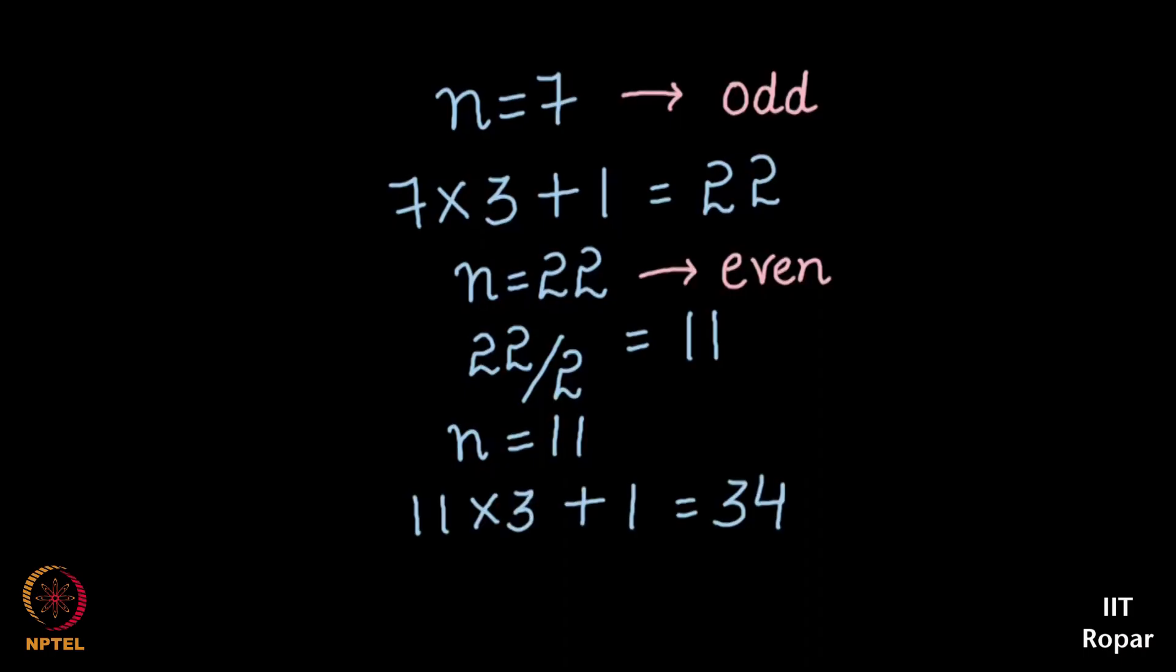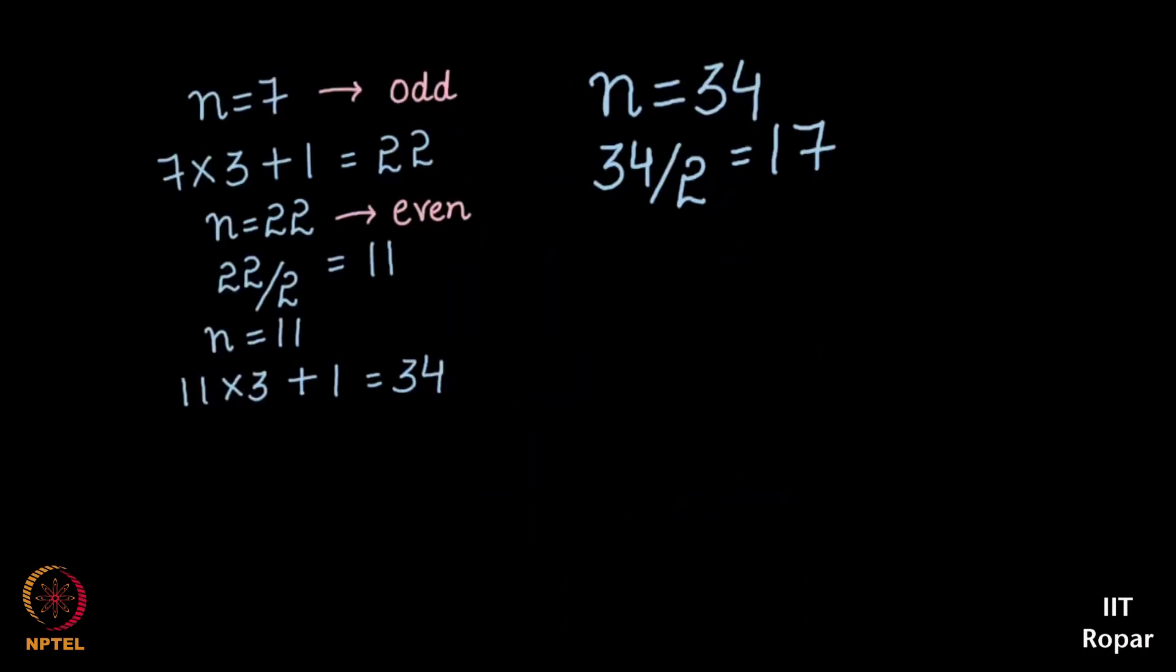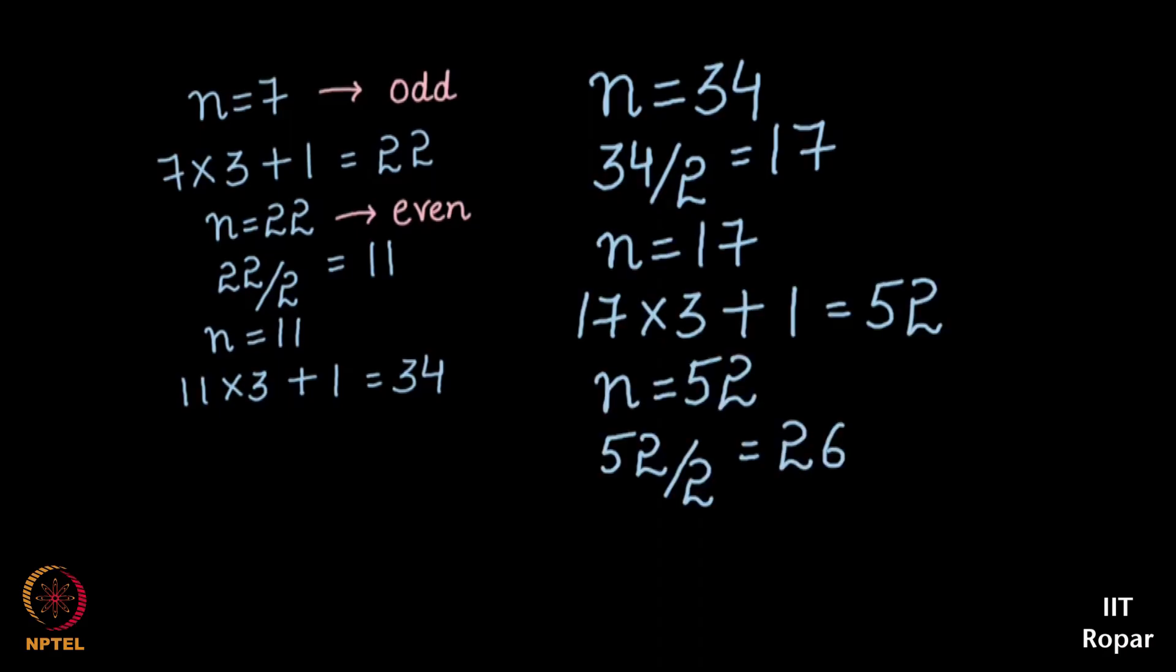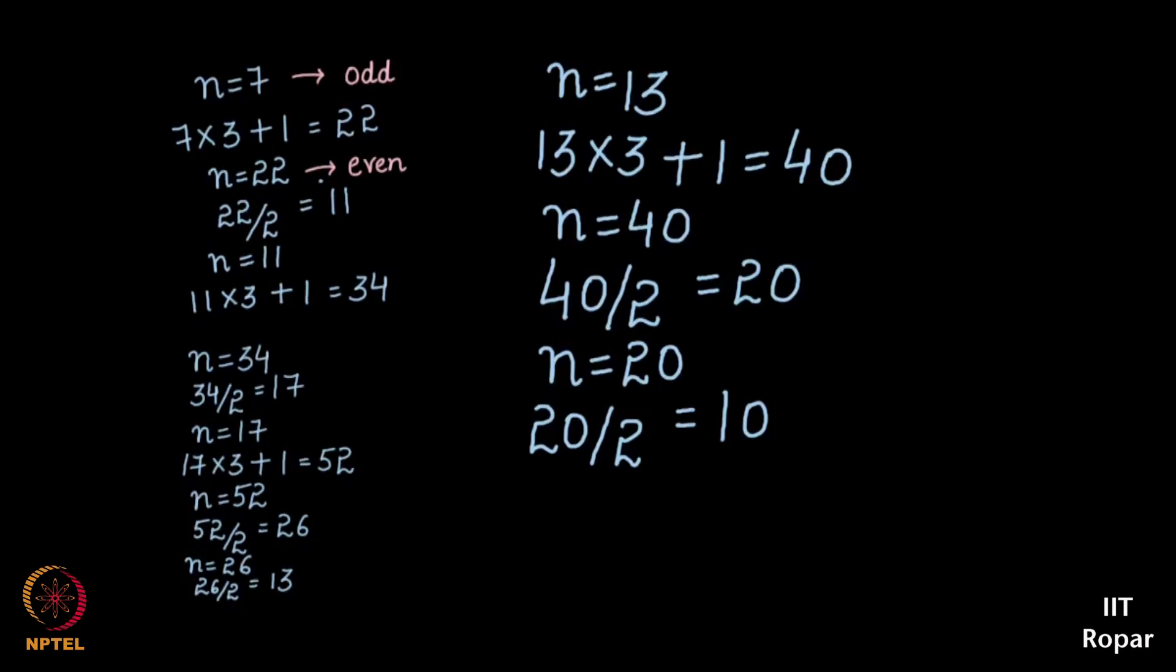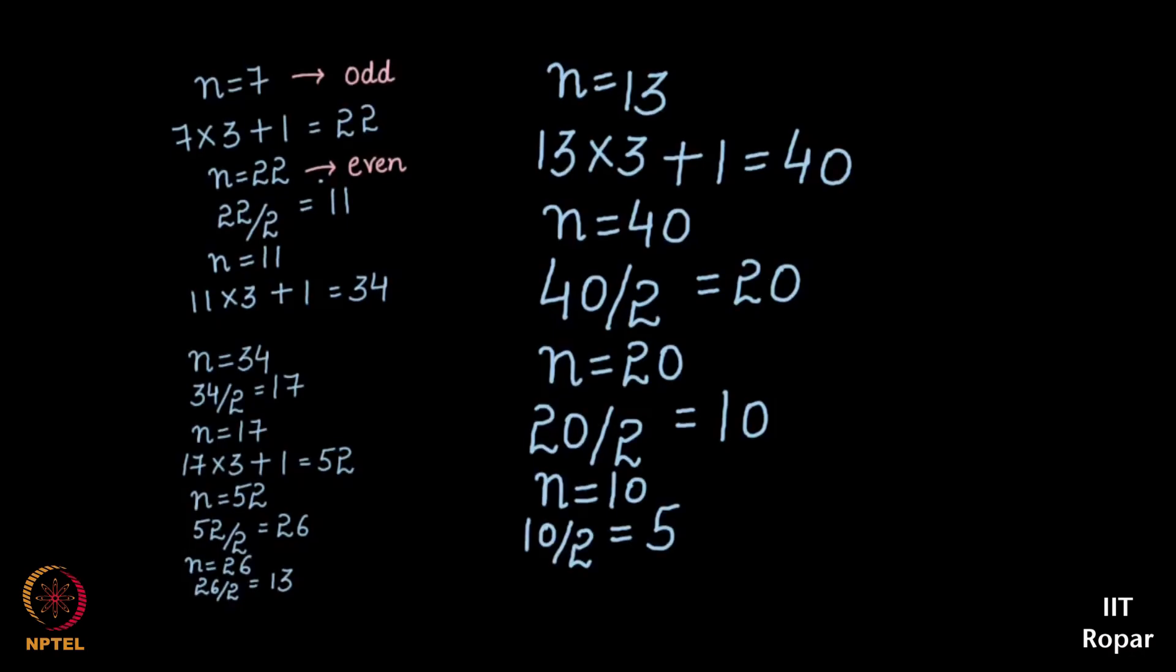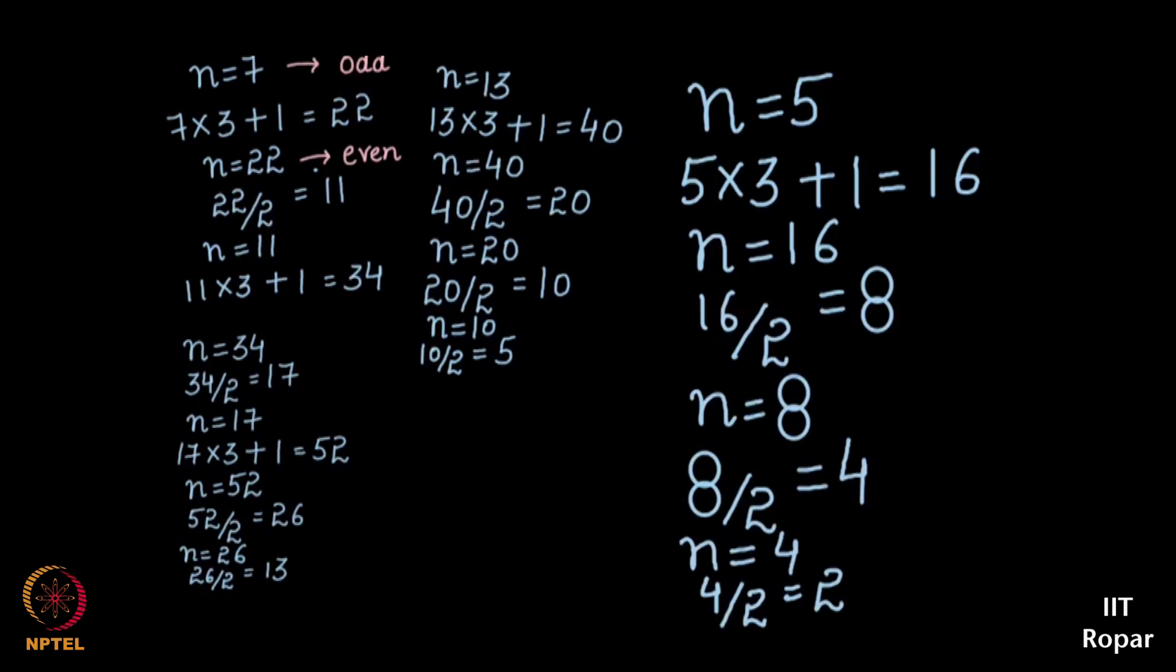I will be slightly fast now. 34 becomes 17, why? You are halving it. 17 becomes 3n plus 1, 3 times 17, 51 plus 1, 52. 52 becomes 26, 26 becomes 13, 13 becomes 39 plus 1 is 40, 40 becomes 20, 20 is even becomes 10, 10 is even becomes 5, 5 is odd becomes 16, 16 is even becomes 8, and then 8 becomes 4, 4 becomes 2, 2 is even so half of that becomes 1.